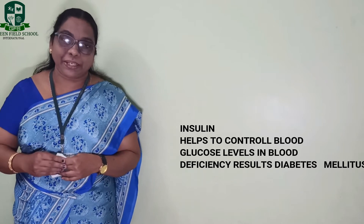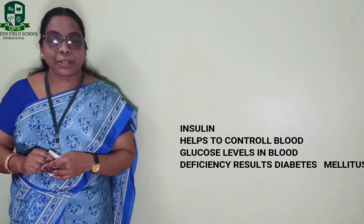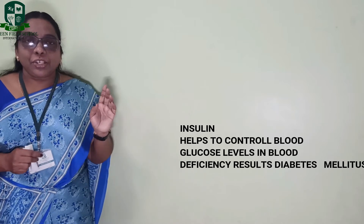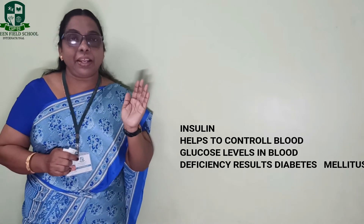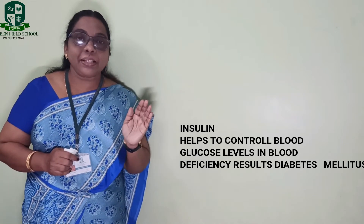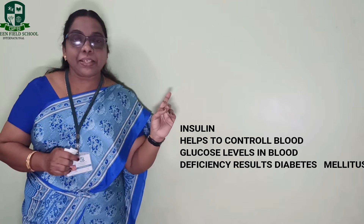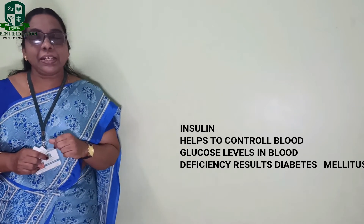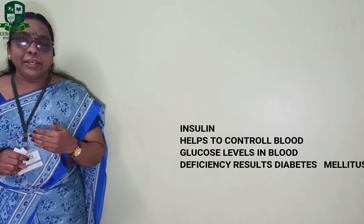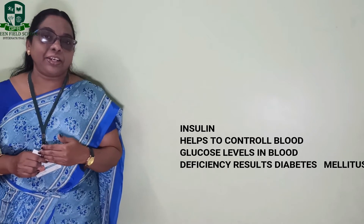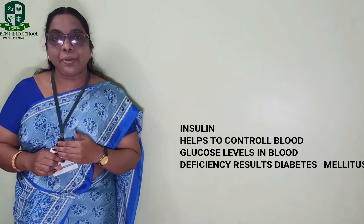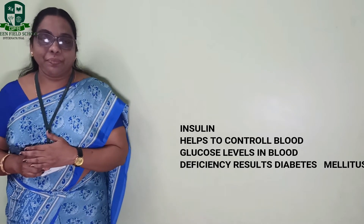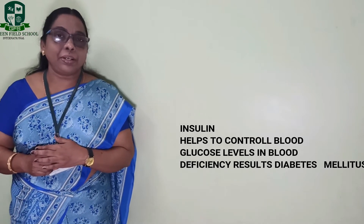There is another problem called diabetes insipidus, which is not because of insulin — it is due to less secretion of vasopressin. That is a different topic to be explained later. So the deficiency of insulin results in the disease named diabetes mellitus, where glucose comes out along with the urine passes.